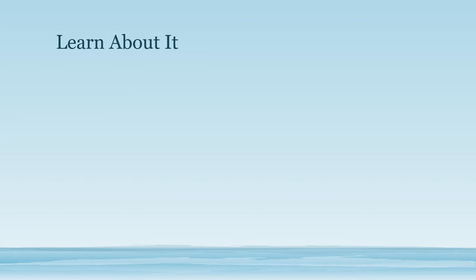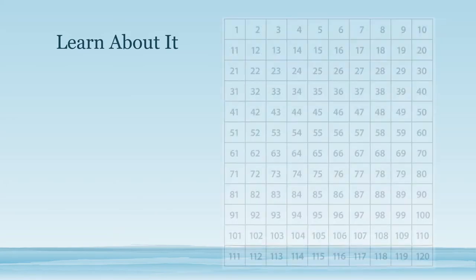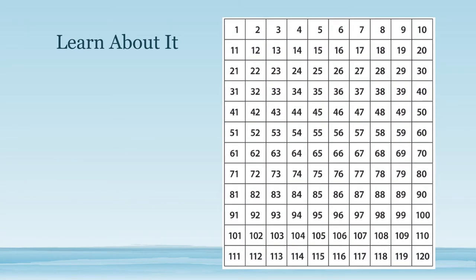Today we are going to use our understanding of adding and subtracting 10 on the 100 chart to help us recognize and extend patterns while adding and subtracting 9 or 11. Let's see what this looks like on the 120 chart — this is just like a 100 chart, only it keeps going until 120. I'm going to solve the problem 66 plus 9 by counting by 1's. Here's 66.